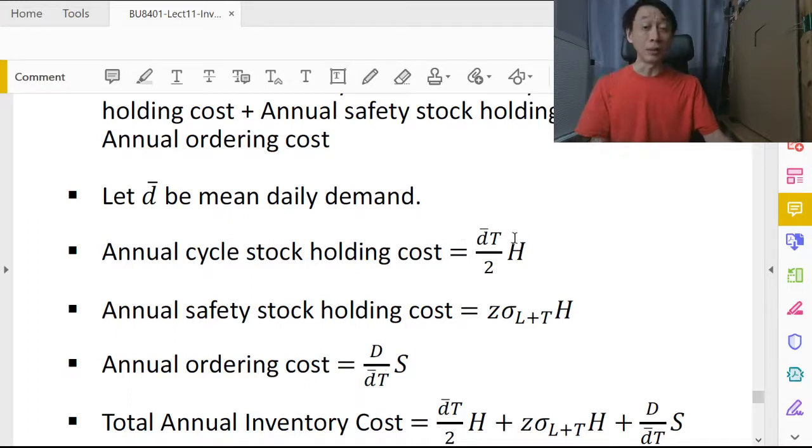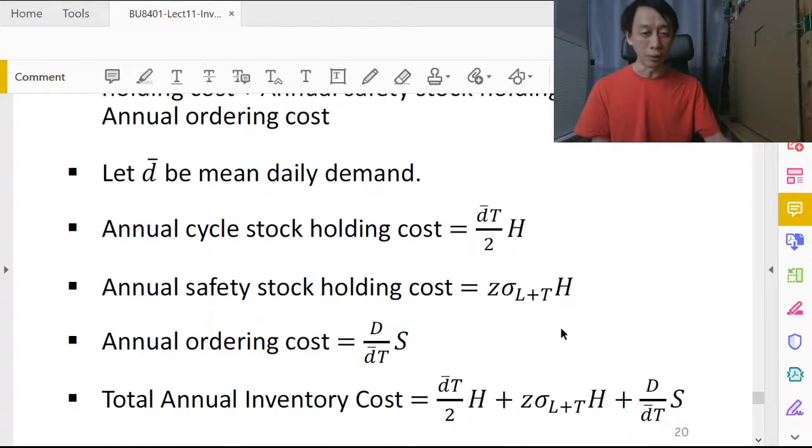The annual holding cost, the annual holding cost for cycle stock, and the annual holding cost for safety stock. And even the formula looks similar because wherever Q, the order quantity, appeared in the continuous review with dynamic demand, we replace that with d-bar times T.